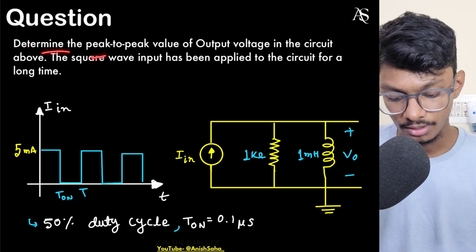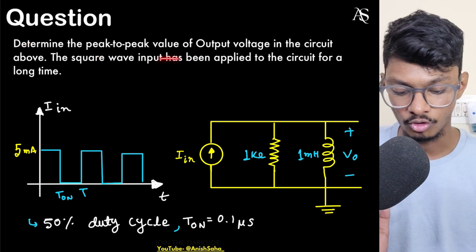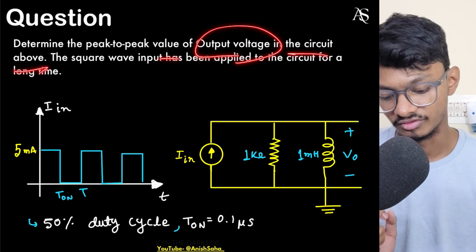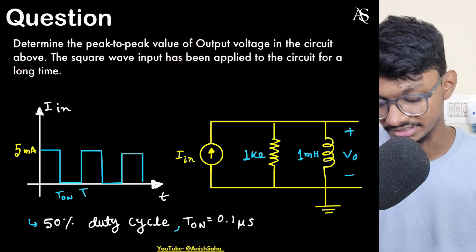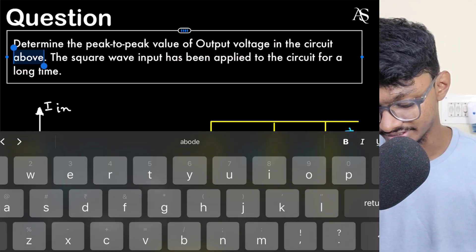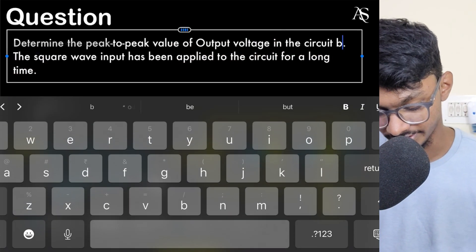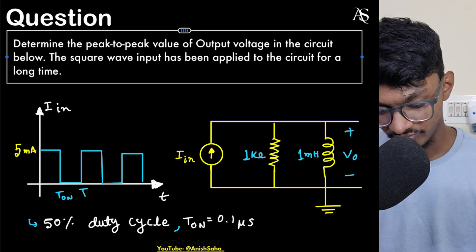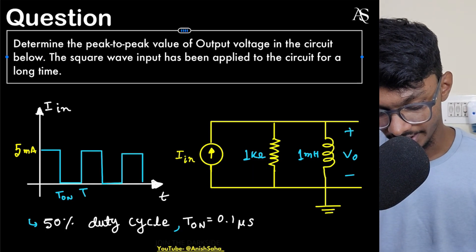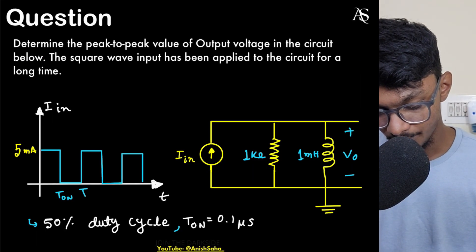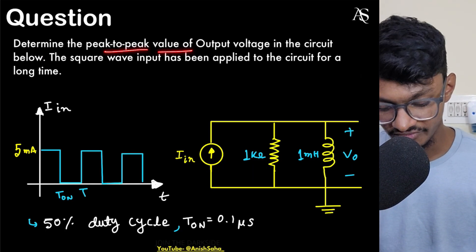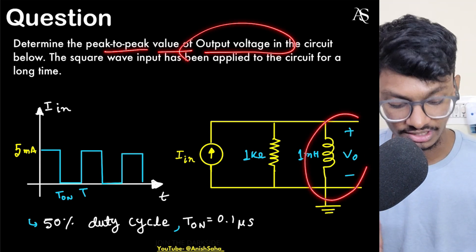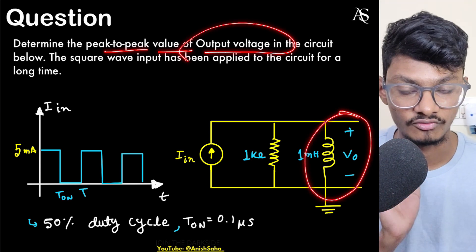Let's start with the question. The question states: determine the peak-to-peak value of the output voltage in the circuit shown below. The output voltage is across the inductor, and we have to find the peak-to-peak value of this.